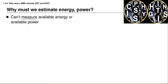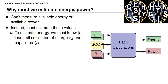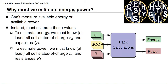No sensor exists that is able to measure the available energy or the available power directly. Instead we must create methods to estimate the amount of energy and power. In order to estimate energy we must know at least all of the cell states of charge and all of the total capacities of the cells in the battery pack. To estimate power we must know at least all the cell states of charge and all of the resistances of the cells in the battery pack.